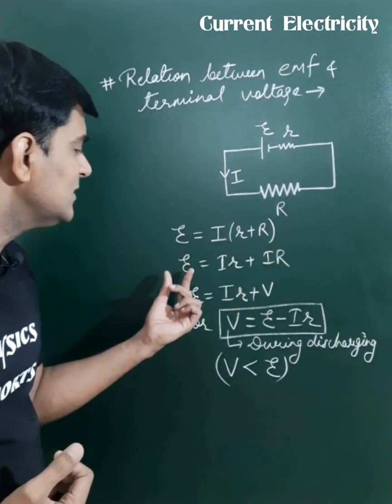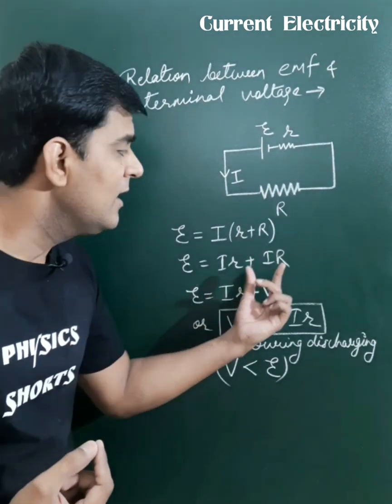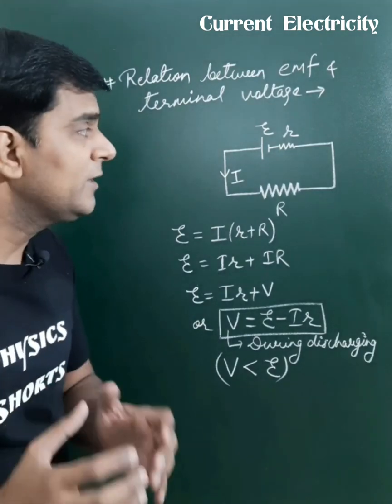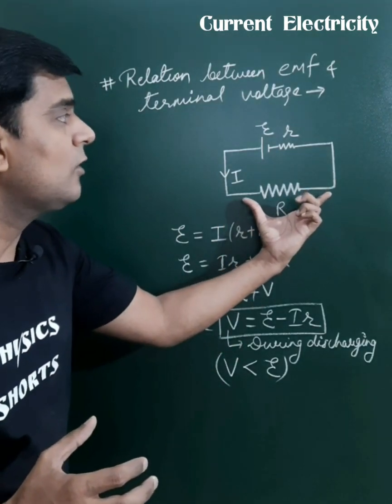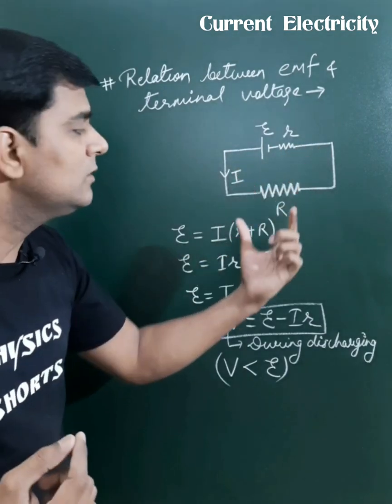We can also say that this total EMF equals the voltage drop across the internal resistance of the cell and voltage drop across the external resistance. Since the voltage across this external resistance, or across this cell when current is flowing through it, is called the terminal voltage.